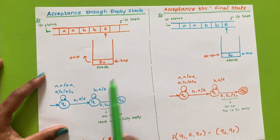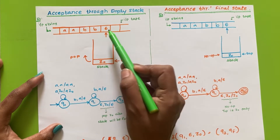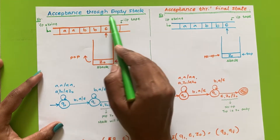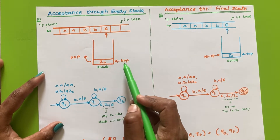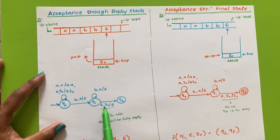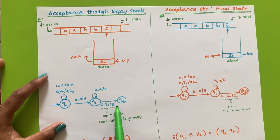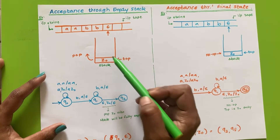If we want acceptance through empty stack by the PDA, that will be represented as empty comma Z0 comma empty — because here we are reading the empty symbol from the input tape and the top of stack is Z0. In case of acceptance through empty stack, we have to pop even this last Z0, so this last Z0 will also get popped out. The transition is represented as empty comma Z0 comma empty, and our stack will be fully empty — even Z0 will not appear in the stack.